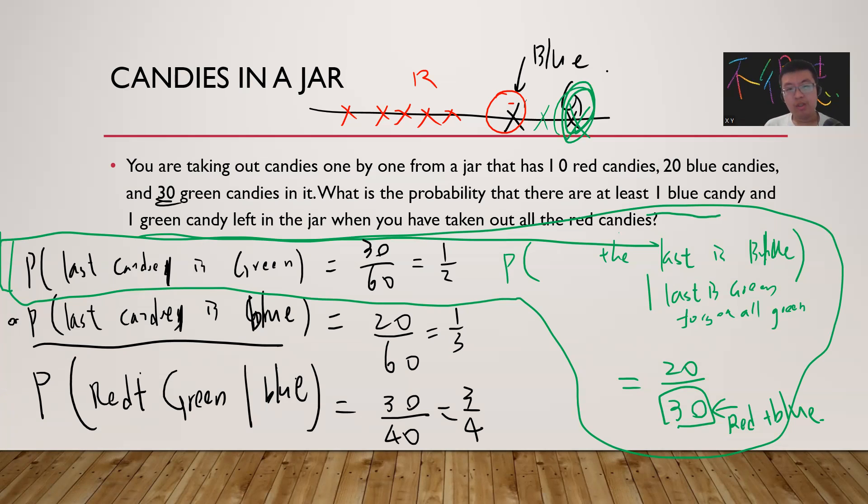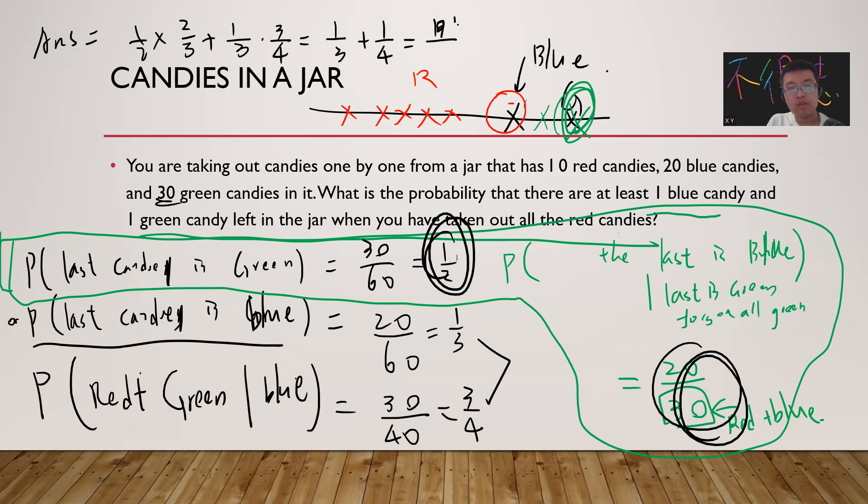So let's write down the answer. The answer will be 1/2 times 2/3 plus 1/3 times 3/4. So it's 7 divided by 12.